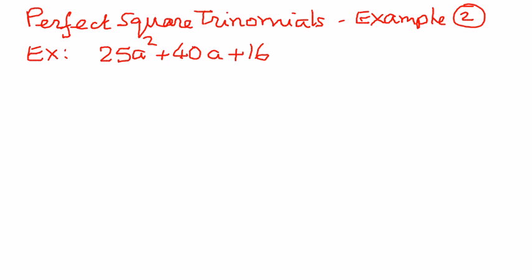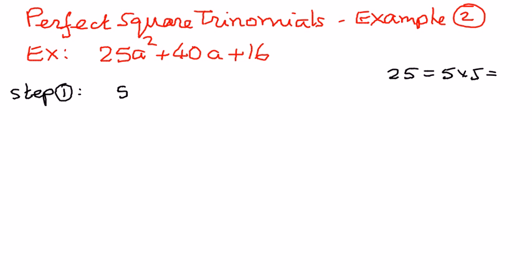So we want to factor this trinomial. As a first step, I'm going to solve this problem two different ways, and I will show you how easy it is to factor these types of trinomials. First, I want to write the given problem as follows. I want to write 25 as 5 times 5, or I can also write it as 5 to the power of 2. So we have 5 to the power of 2, a to the power of 2, plus 40a plus 16.